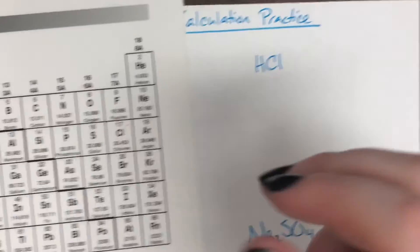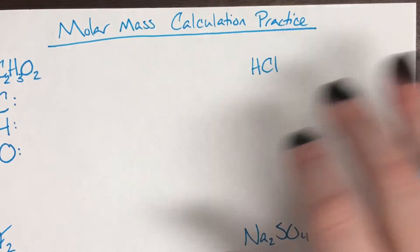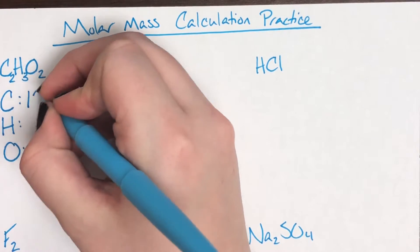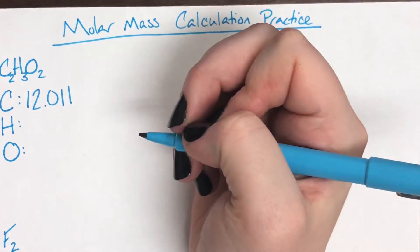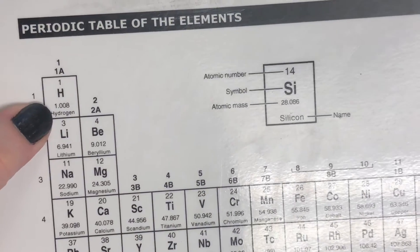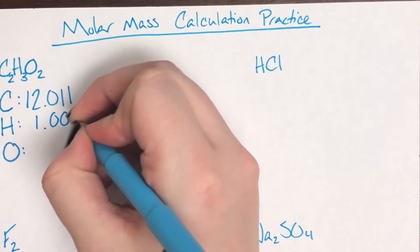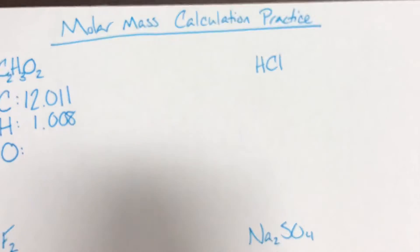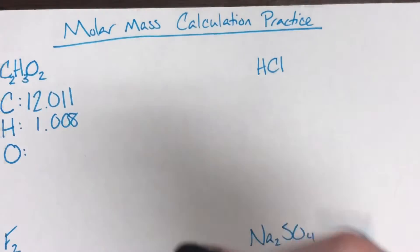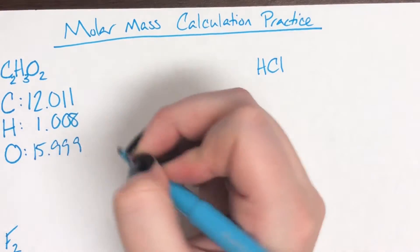I'm going to look at the periodic table and find carbon. Carbon's mass is 12.011. Then for hydrogen, I'm going to see that it is 1.008. Once I have hydrogen's mass, I can go on to oxygen. Oxygen's mass according to the periodic table is 15.999.